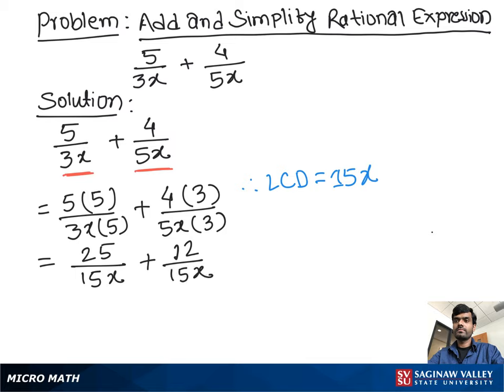Now as you see, both terms have same denominator, so our lowest common denominator LCD is 15x. You can add 15x as the lowest common denominator. Now 25 plus 12, so 25 plus 12 is 37 over 15x, and this is our final answer.